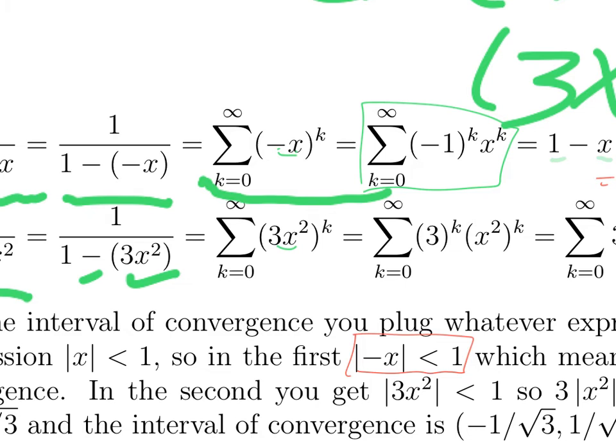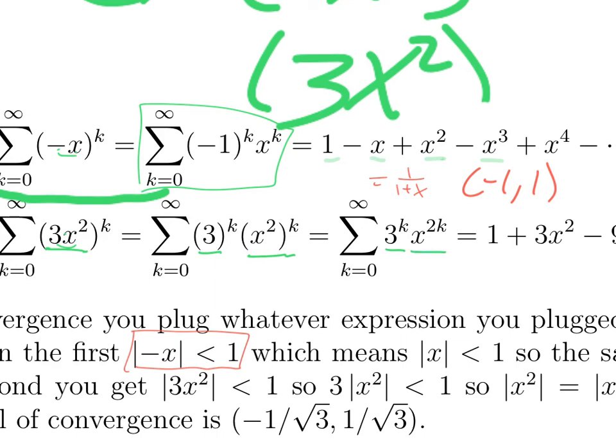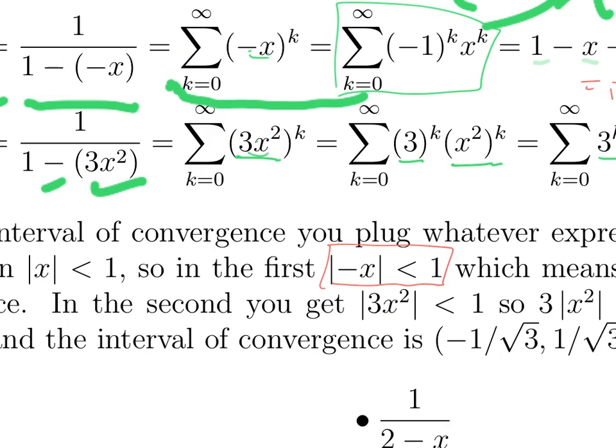Same thing happens over here. You replace x with 3x squared. Wherever you see x in the sum, raised to the k, you just raise 3x squared to the k. Rules of exponents tell you that that is 3 to the k times x squared to the k. Another rule of exponent tells you that's 3 to the k times x to the 2k. And here's what that looks like. When k equals 0, it's 1. When k equals 1, it's 3 to the 1 times x to the 2, and so on. That should be a plus sign. Another error. And we'll fix that in the notes.